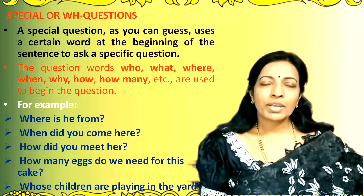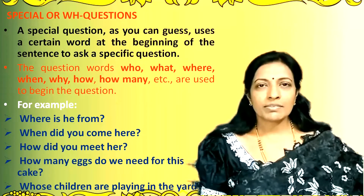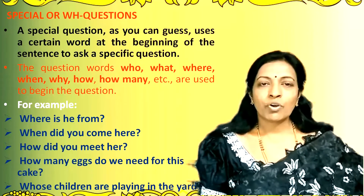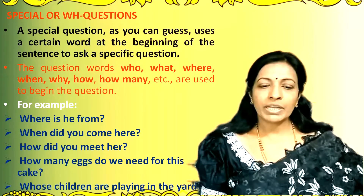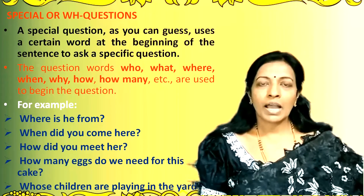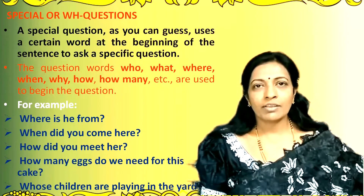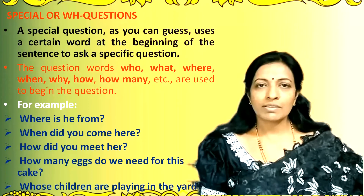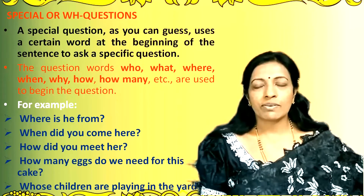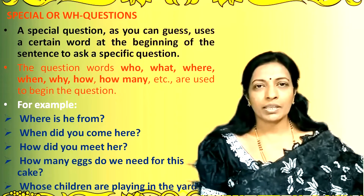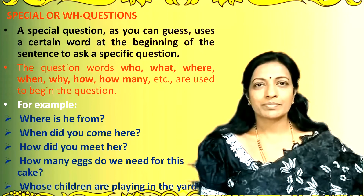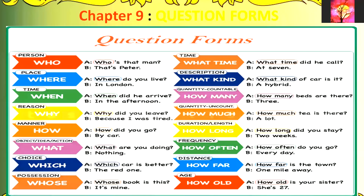For example: 'Where is he from?' 'When did you come here?' 'How did you meet her?' 'How many eggs do we need for this cake?' 'Whose children are playing in the yard?' Let us look at some of the different kinds of question words which can be used to form questions.